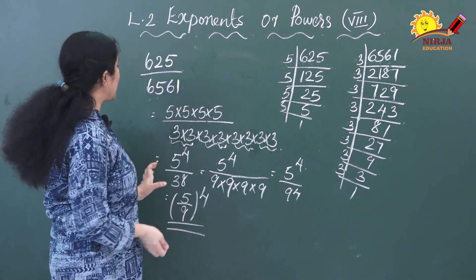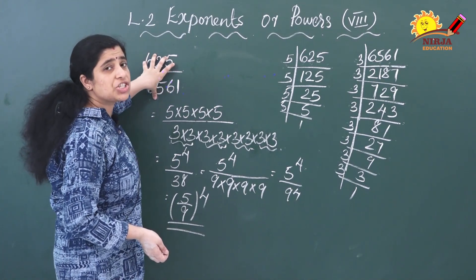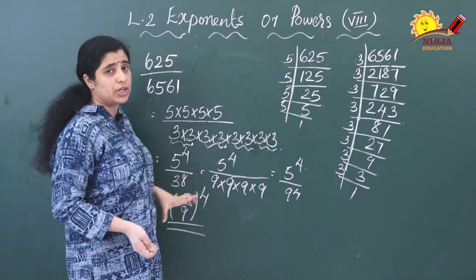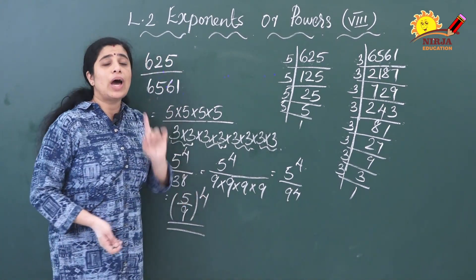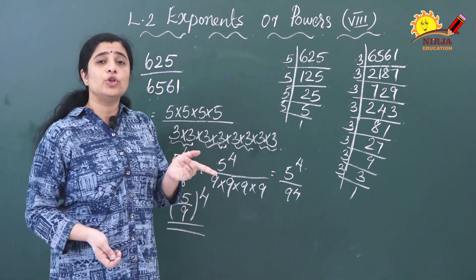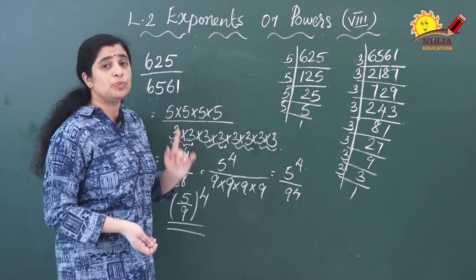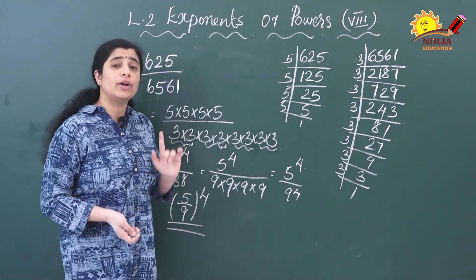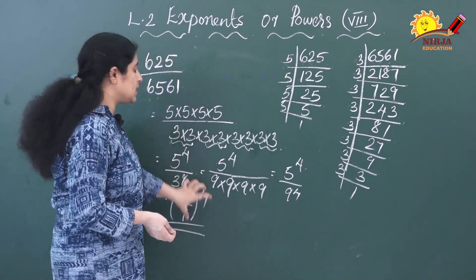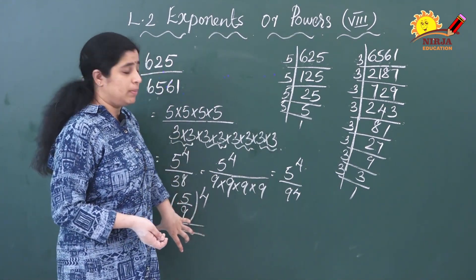Like this way you have to convert a simple rational number into exponential form. You have to be careful that the exponent of both numerator and denominator should be the same for a rational number; otherwise, we can't consider it as a rational number.